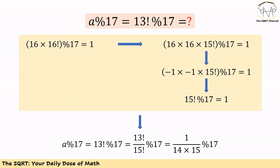Now let's simplify 13 factorial mod 17 further using a trick. We know 16 times 16 factorial mod 17 is 1. We replace 16 factorial by 16 times 15 factorial, then replace 16 by −1 in mod 17. This gives us 15 factorial mod 17 equals 1.